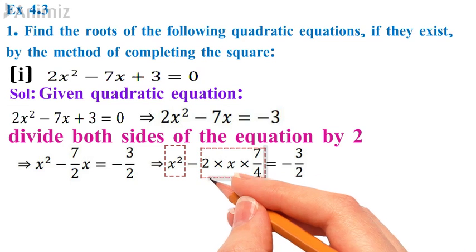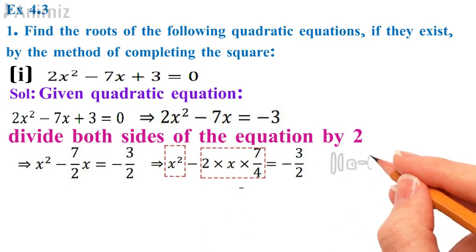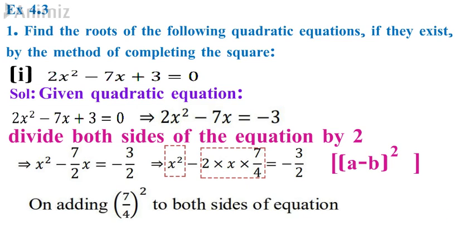This is of the form a² - 2ab where I have my b as 7/4. But here b² is missing, that is (7/4)² is missing. So I am adding (7/4)² on both sides of the equation.